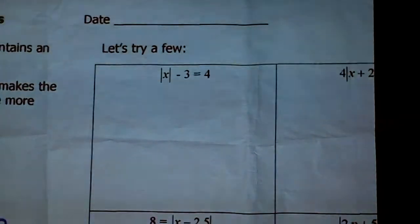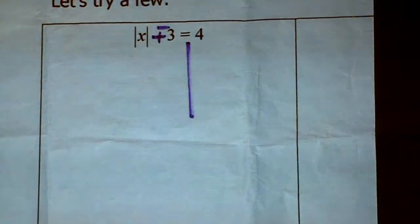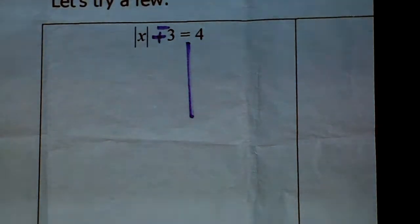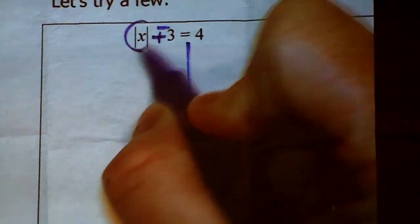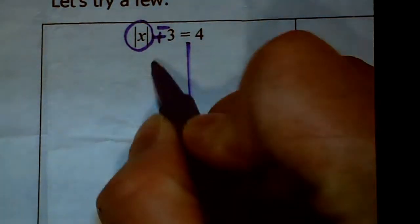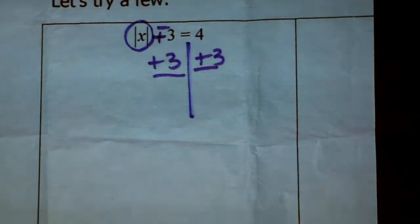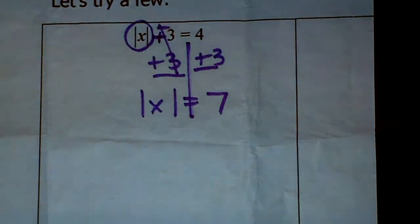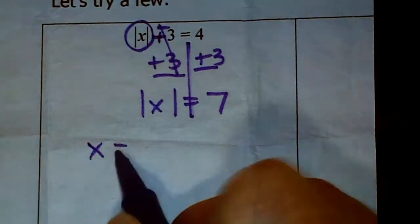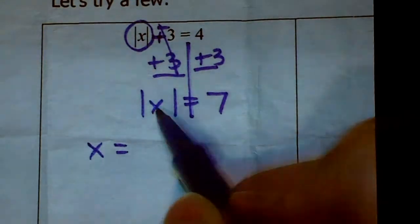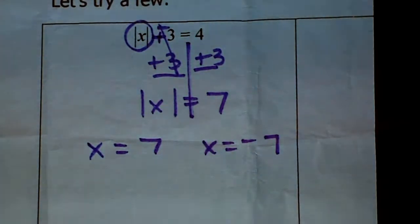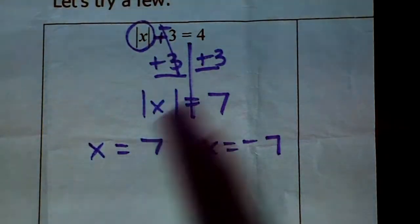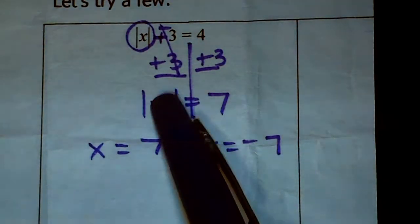Let's try a few examples. First: the absolute value of X minus 3 equals 4. Step one says to isolate the absolute value expression. I'll get rid of the negative 3 by adding 3 to both sides. That gives me |X| = 7. Now X can equal 7, or X can equal negative 7, because the absolute value of 7 is 7 and the absolute value of negative 7 is also 7.